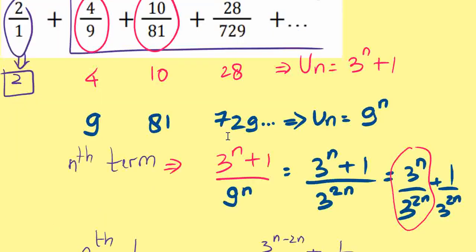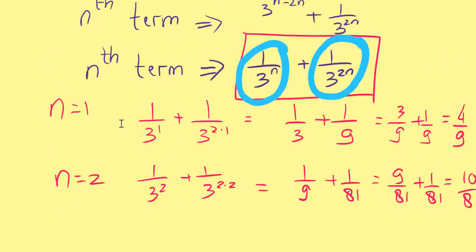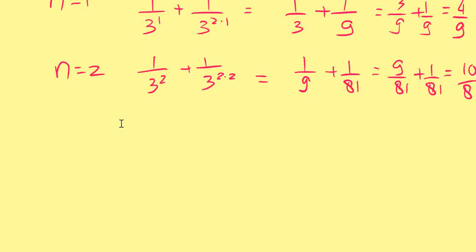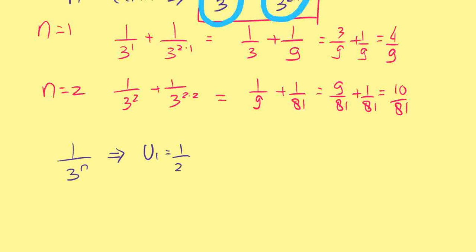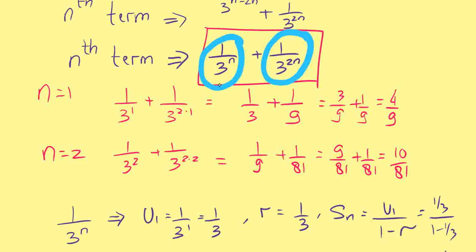To get the total sum of this series, we separate it and count the sum of each part independently. For the first part, 1 over 3 to the power of n: when n equals 1, the first term is 1 over 3, and the common ratio r is also 1 over 3. The sum of the infinite geometric series is a over (1 minus r), which equals (1 over 3) divided by (2 over 3), giving us 1 over 2.